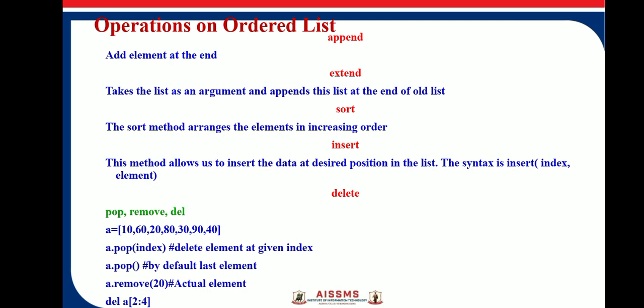There are a few more operations: all, any, len, max, min, sum, and sorted. These functions are used to perform operations on a list. There is a difference between sort and sorted — the sorted function returns a new sorted list, whereas sort modifies the list in place.